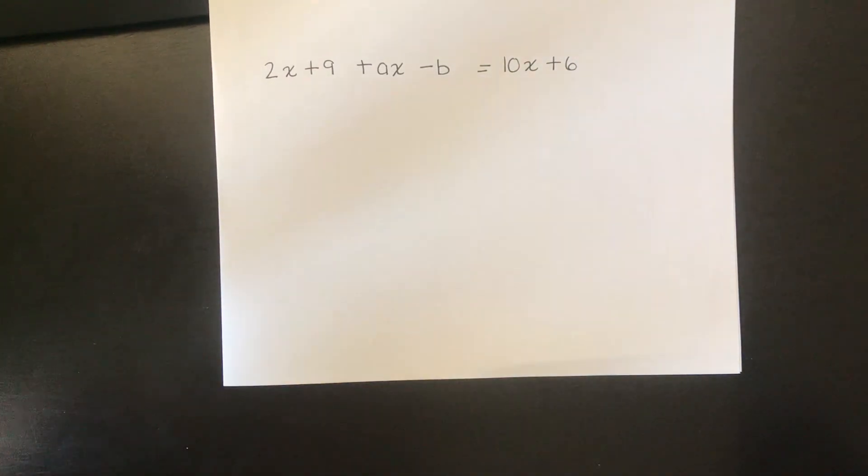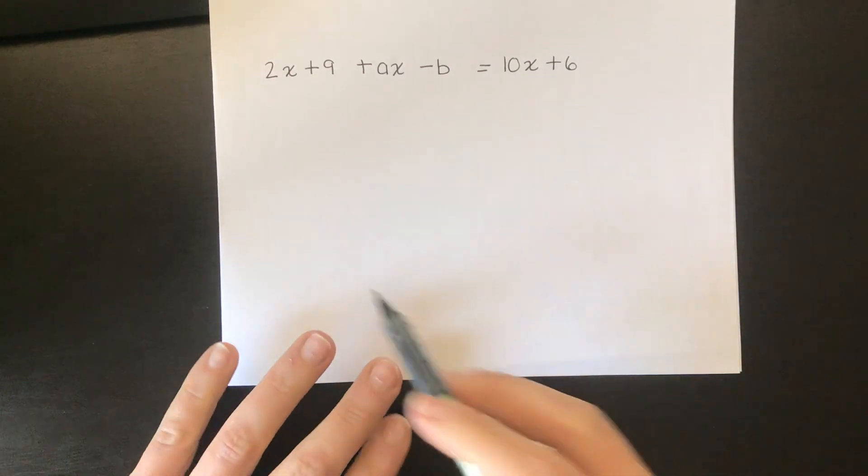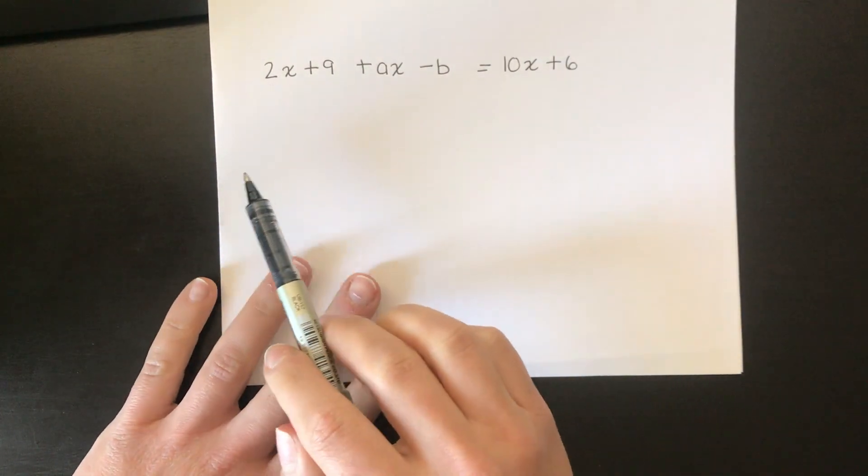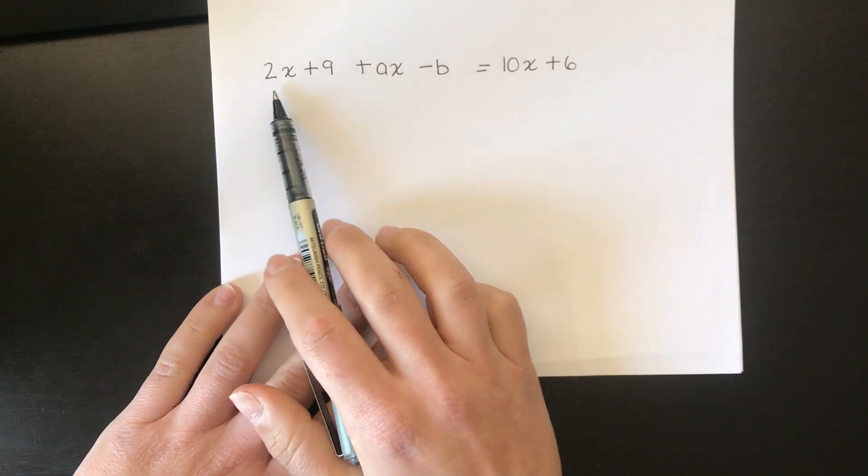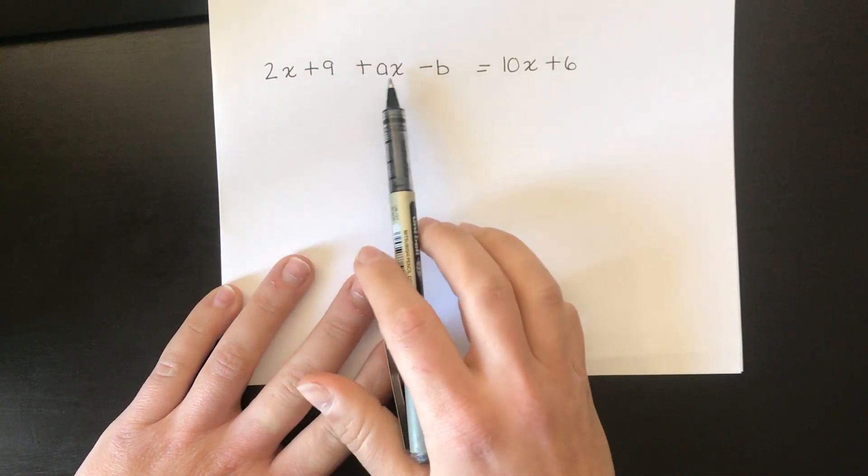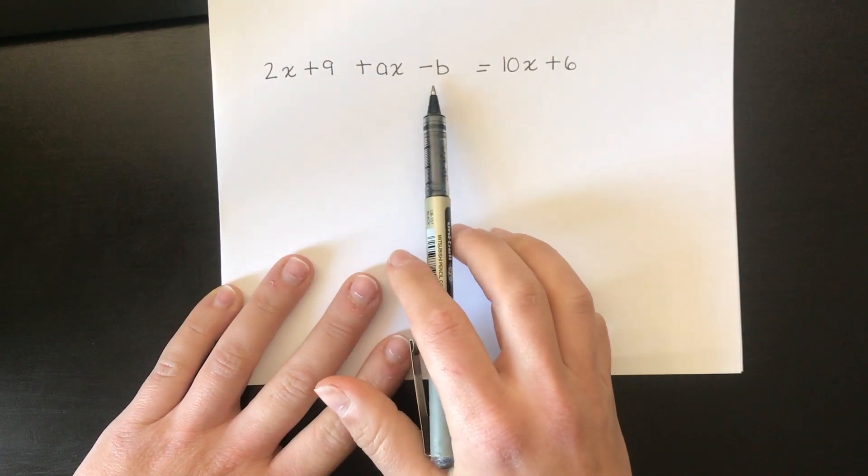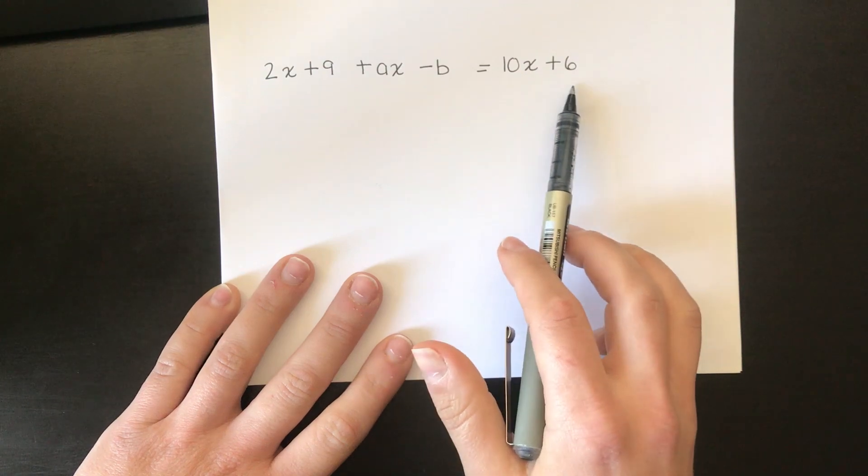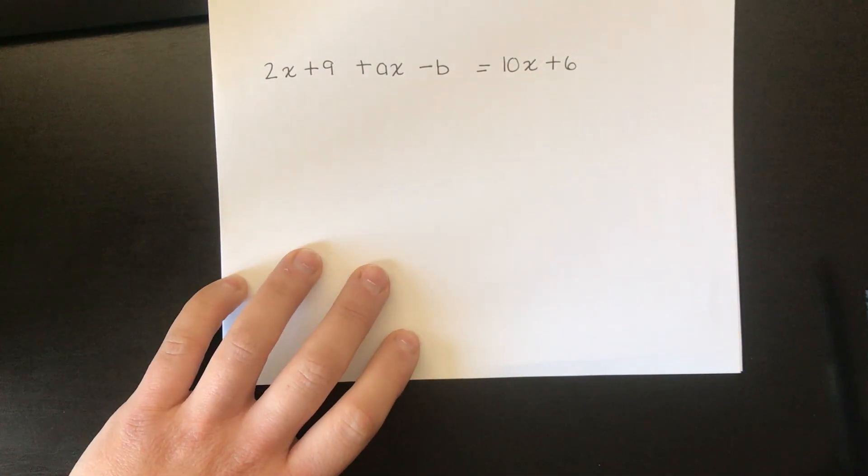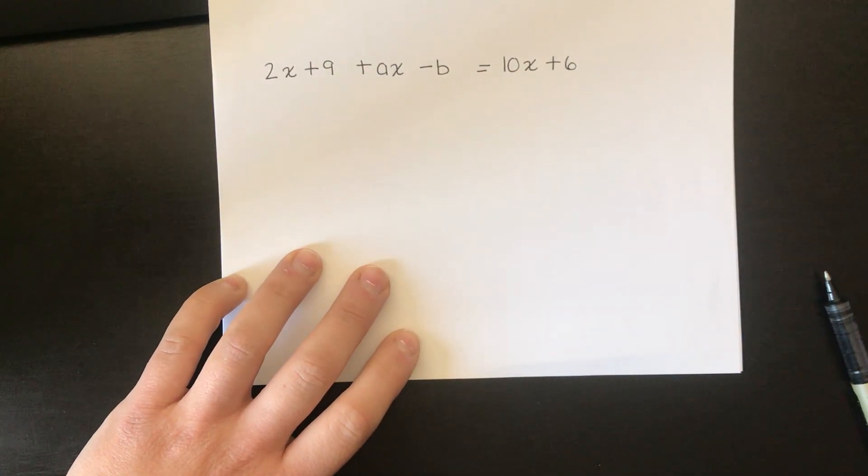Hi again year 10s! Example 2. This is the next example on the PowerPoint. We need to find a and b such that 2x + 9 + ax - b = 10x + 6. This one doesn't have any squared terms in it whatsoever.